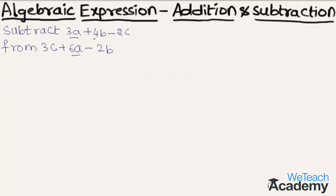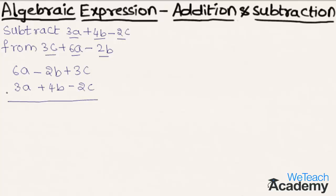Now let us write the like terms one below the other. Writing these two expressions in order we get 6a minus 2b plus 3c, and the second expression as 3a plus 4b minus 2c. The additive inverse of 3a is minus 3a, the additive inverse of plus 4b is minus 4b, and the additive inverse of minus 2c is plus 2c. So 6a minus 3a is 3a, and minus 2b minus 4b is minus 6b, and plus 3c plus 2c is plus 5c.